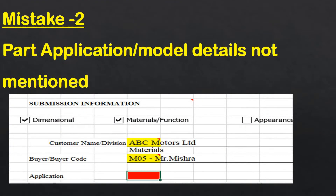Mistake number two: part application is not mentioned in the PSW. Part application means whichever part you are manufacturing — which model it is fitted into and what is the application. For example, if it is fitted into a specific vehicle model — cars, trucks, or anything — you have to mention the model name and whether it is applied in the cabin, engine, transmission, or axle. That information along with the model must be updated.